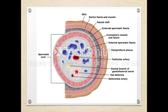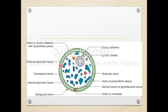In diagrams showing the spermatic cord cross-section: the internal spermatic fascia is innermost, then the cremasteric fascia, then the external spermatic fascia outermost. Inside are the vas deferens, artery of the vas deferens, genital branch of the genitofemoral nerve (L2), testicular artery (branch of aorta), and pampiniform plexus of veins. The internal spermatic fascia is derived from fascia transversalis; cremasteric fascia from internal oblique and transversus abdominis; external spermatic fascia from external oblique aponeurosis.